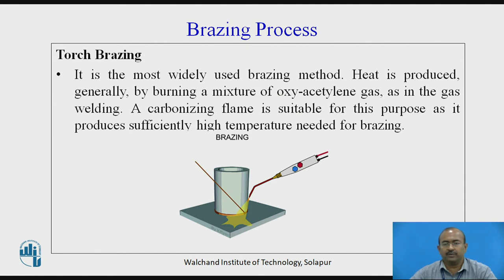Brazing process types: first, torch brazing — it is the most widely used brazing method. The torch delivers heat energy in the form of a flame; the rod shown represents the filler material. Heat is produced by burning a mixture of oxyacetylene gas, as in gas welding. A carbonizing flame is suitable as it produces sufficiently high temperature needed for brazing. You can look at the image to know more about how torch brazing is carried out.